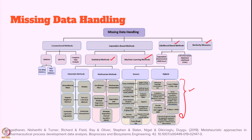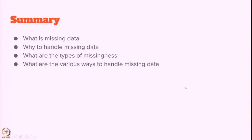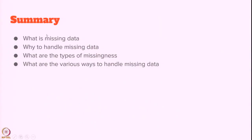To summarize: in this lecture we saw what is missing data, why to handle missing data, and the three types of missingness — MNAR, MAR, and MCAR. Based on complexity, we can ignore, use some imputation, or collect the data again. Various methods are available from the literature, and you can choose the best possible method for a given data or problem.